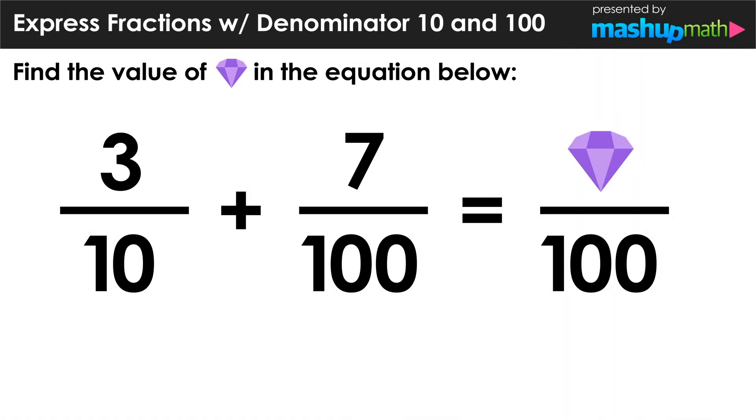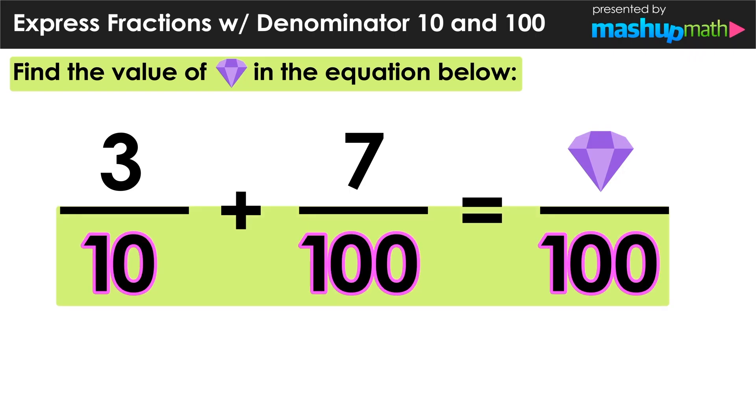So now let's go ahead and extend our thinking to a problem where we have to find the value of the purple diamond symbol in the equation below. Notice that the denominators of these three fractions are not the same. The denominator of the first fraction is 10, and the denominator of the second two fractions are both 100.